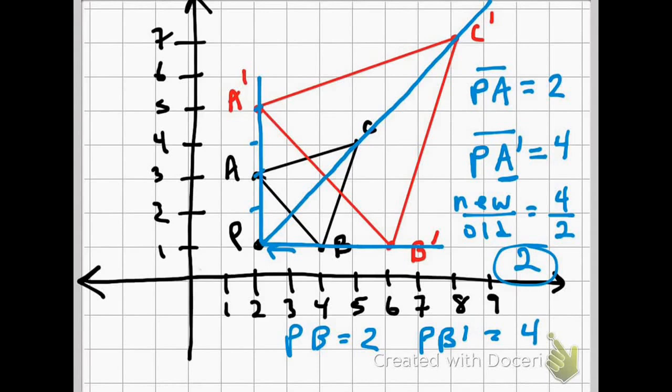However, notice segment PC, which I'm outlining here. PC is diagonally across the grid. Typically, it's not a good idea to count diagonally across the grid because you're going to be dealing with irrational numbers. So use the grid to your advantage to figure out the scale factor in problems like these.